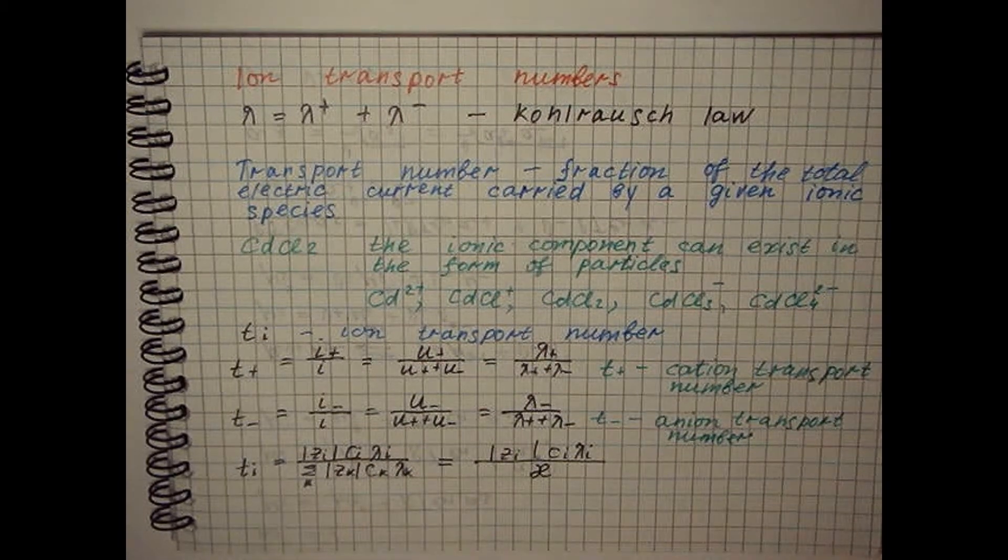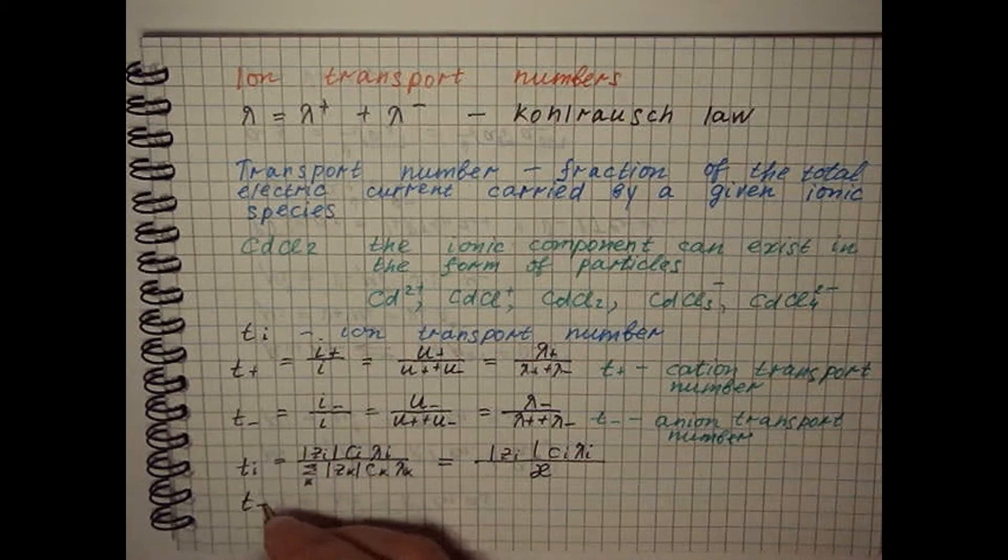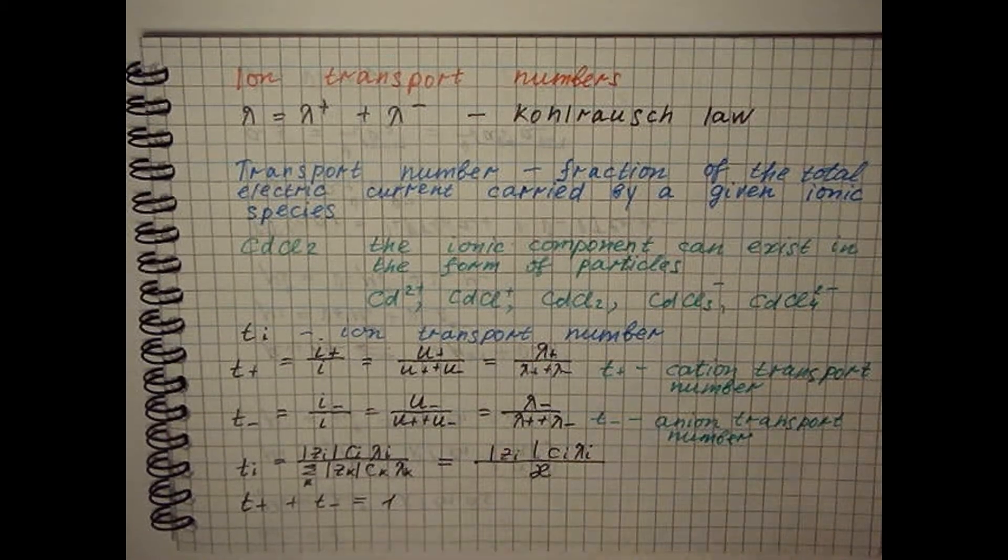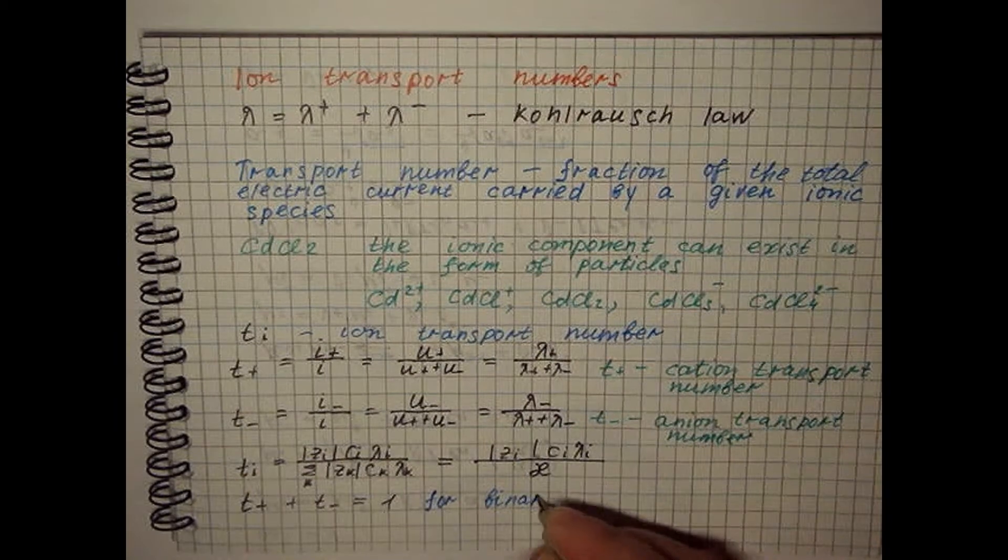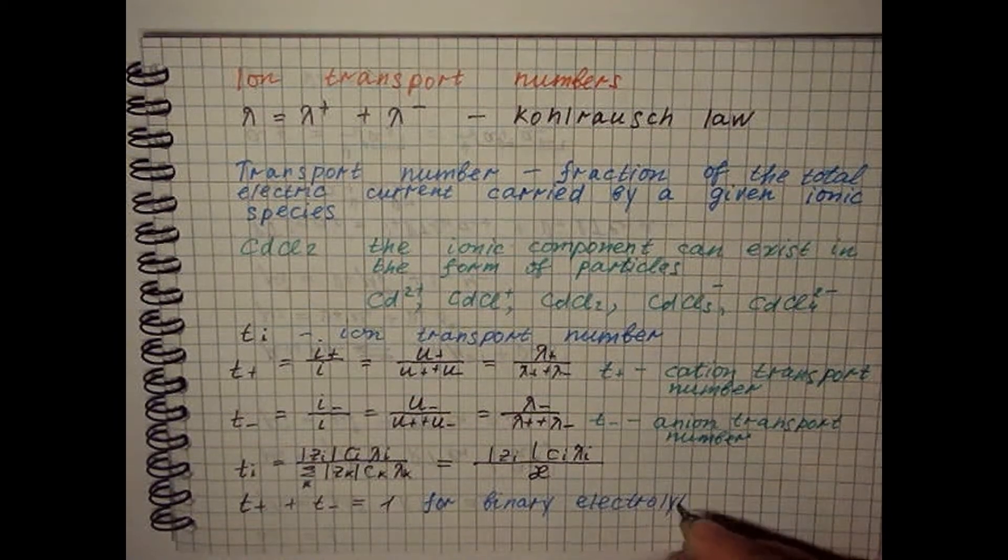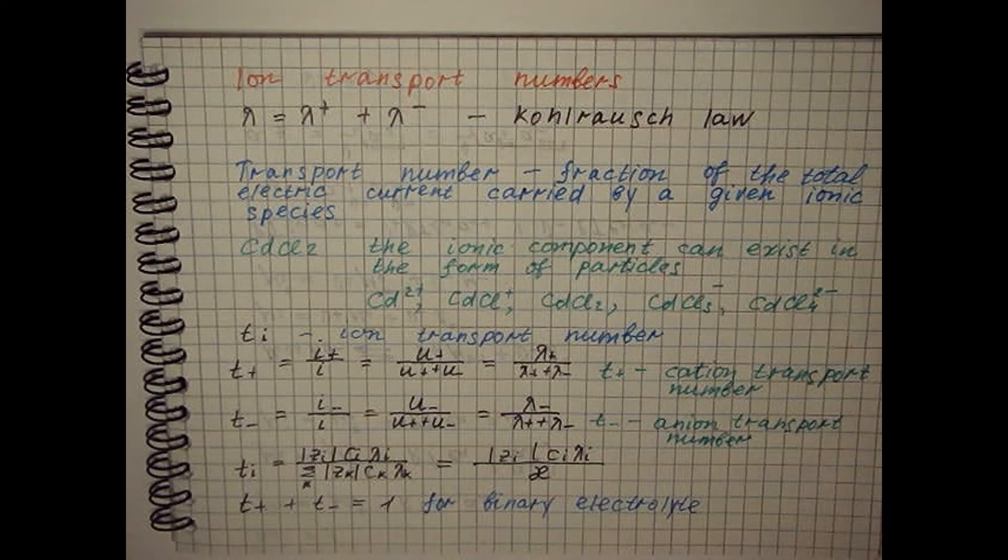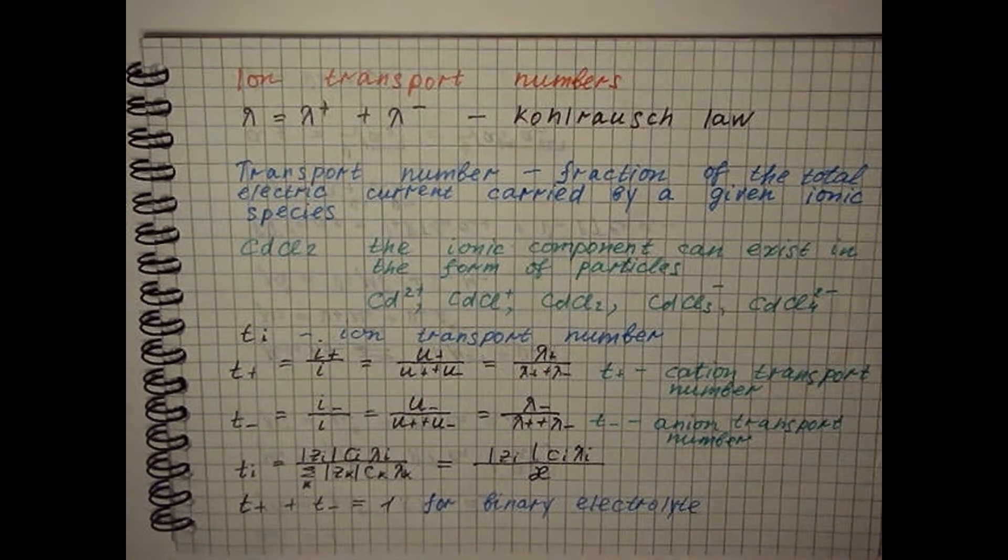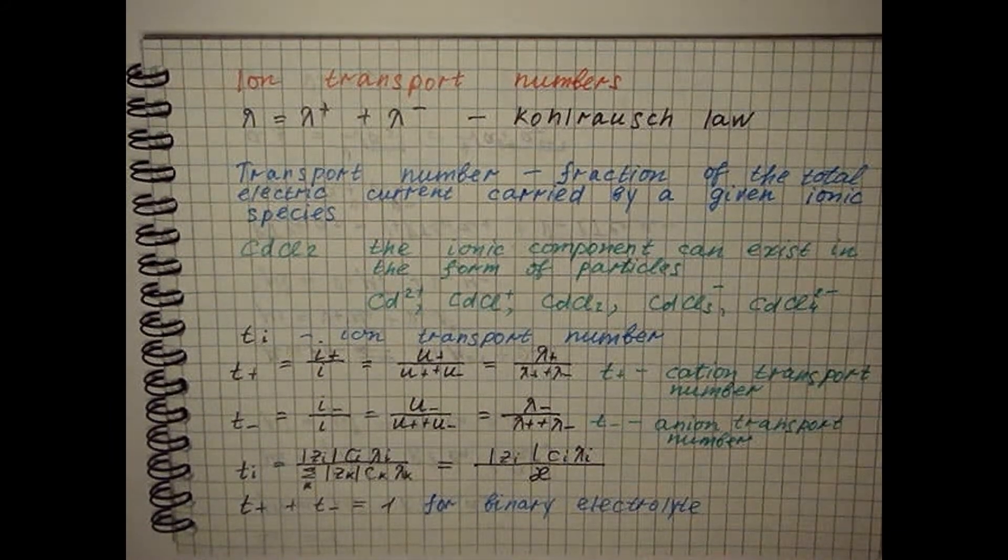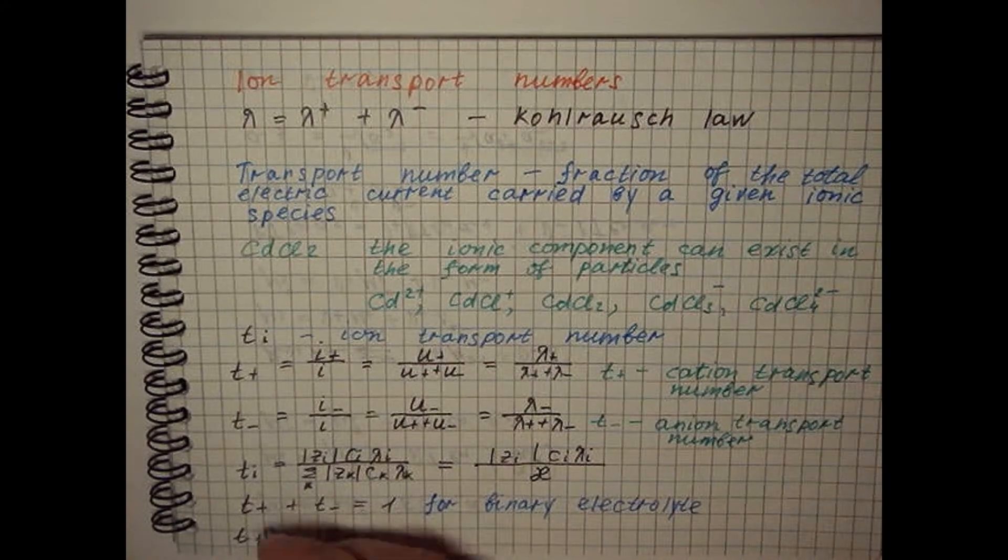In a solution of binary electrolyte, using conductivity in the equations for determining the transport numbers, we obtain the limiting transport numbers.